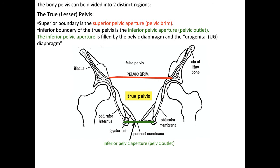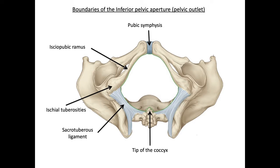The true pelvis, also known as the lesser pelvis, is contained between the superior and inferior pelvic apertures. The inferior pelvic aperture is covered by the urogenital diaphragm, which contains connective tissue, musculature, the anus, urethra, and vaginal orifices. Here we see an inferior view of the pelvis, similar to what a gynecologist would see when examining a patient. We can see how the pubic symphysis connects to the ischiopubic ramus, which connects to the ischial tuberosities, connecting to the sacral tuberous ligament, which then connects to the coccyx. These connections form the pelvic outlet, also known as the inferior pelvic aperture.